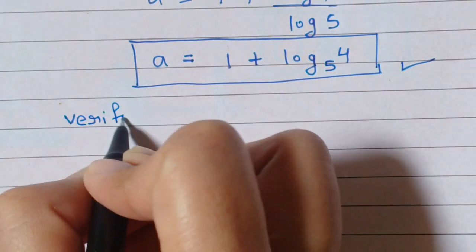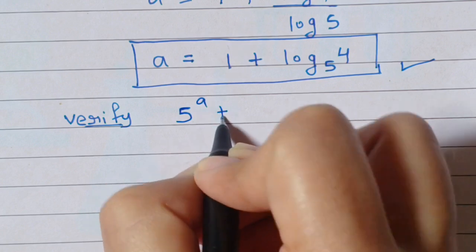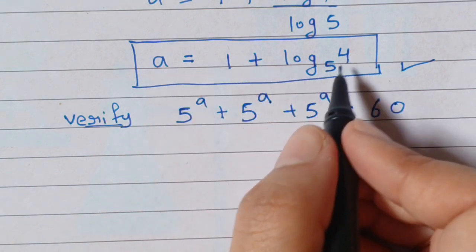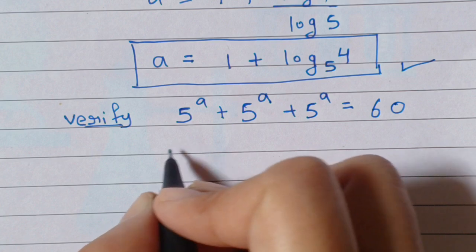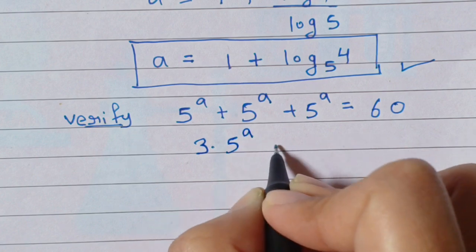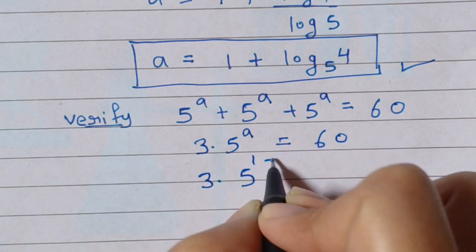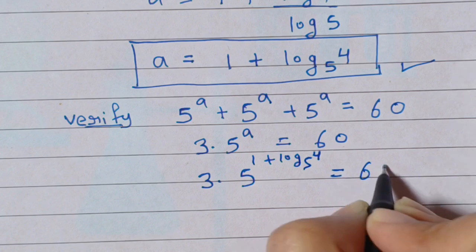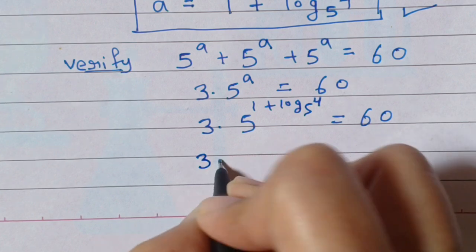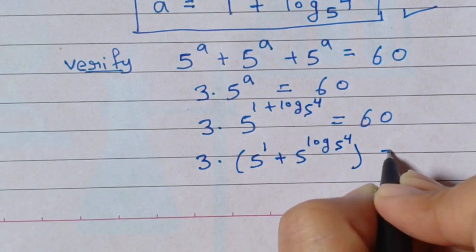Let's verify it. We have 5 to the power a plus 5 to the power a plus 5 to the power a is equal to 60. We know the value of a, that is 1 plus log 4 base 5. We put the value here. There are 3 times 5 to the power a, so write 3 times 5 to the power a is equal to 60. Now put the value of a: 3 into 5 to the power 1 plus log 4 to the base 5 is equal to 60. This becomes 5 to the power 1 times 5 to the power log 4 to the base 5, which equals 60.